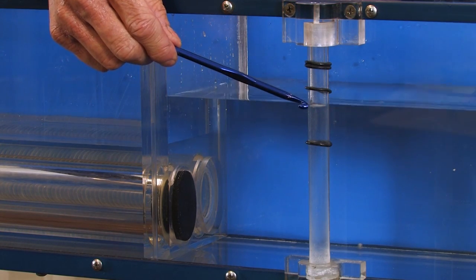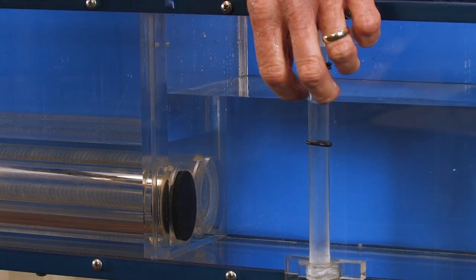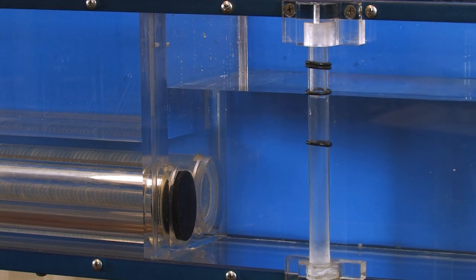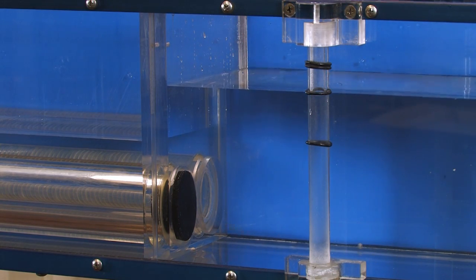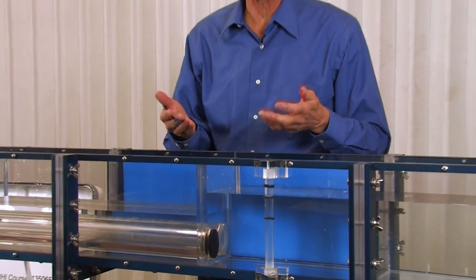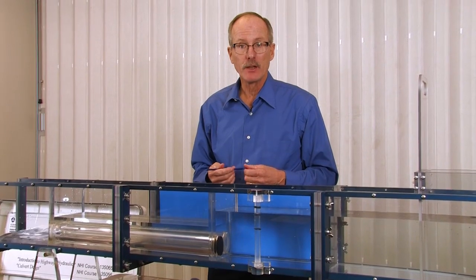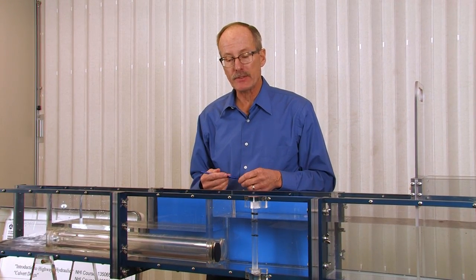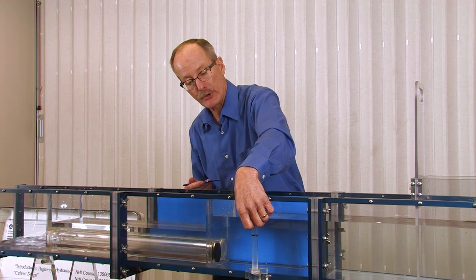As we can see, the headwater is rising quite a bit. Once that stabilizes, I'll go ahead and mark that. But what this tells us is that the change in area on this particular model going from a 24 inch to an 18 inch pipe far outweighs the change in roughness. That in fact the hydraulic performance doesn't improve, it gets worse.